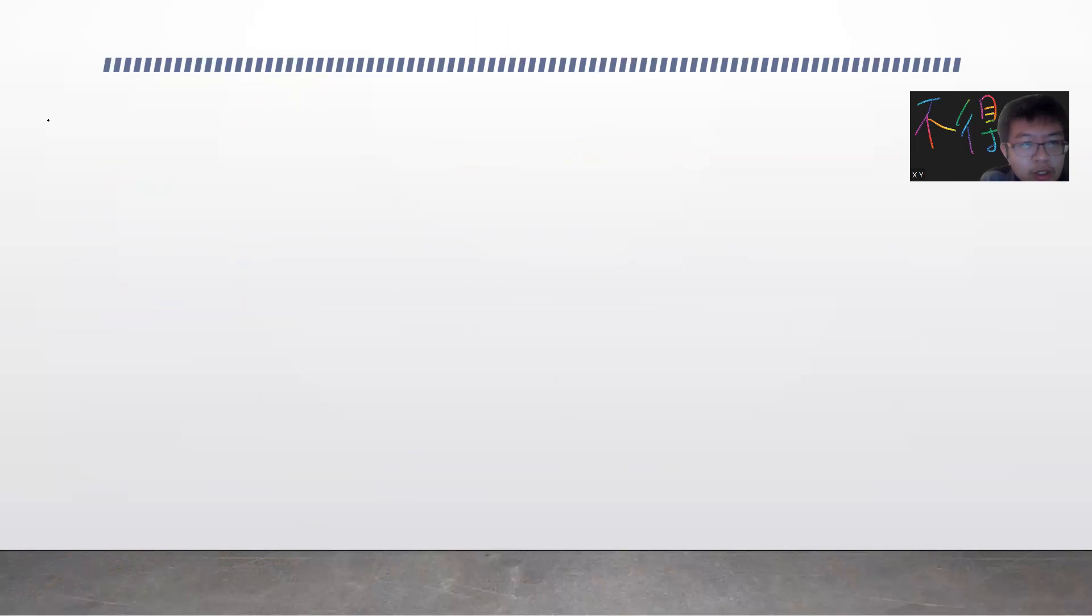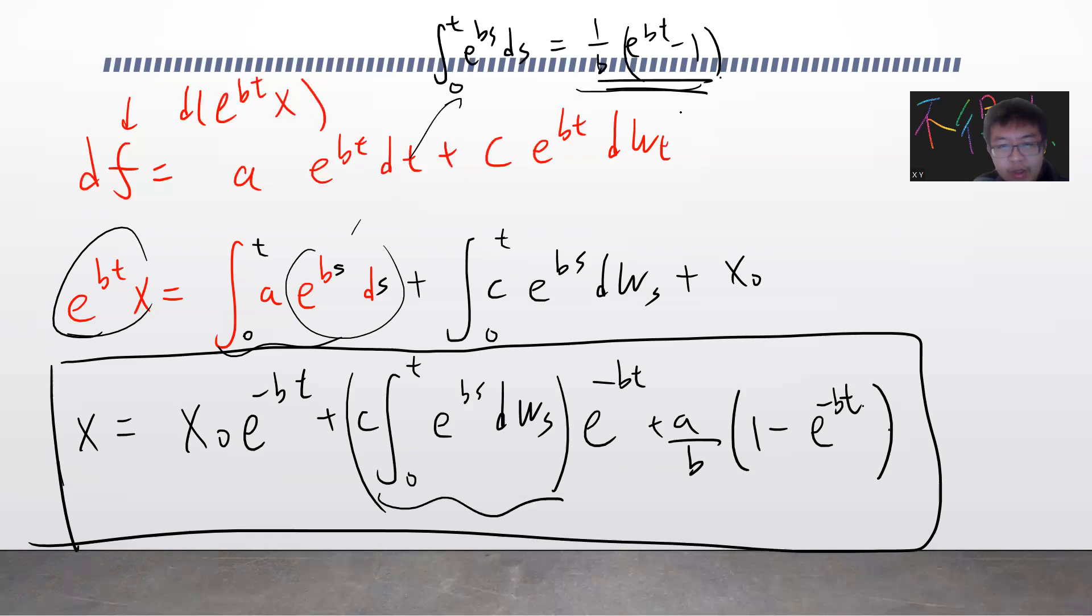Let's do the sanity check. When c goes to zero, then I get X = X₀ e^(-bt) + a/b(1 - e^(-bt)), and you can easily prove this is correct.